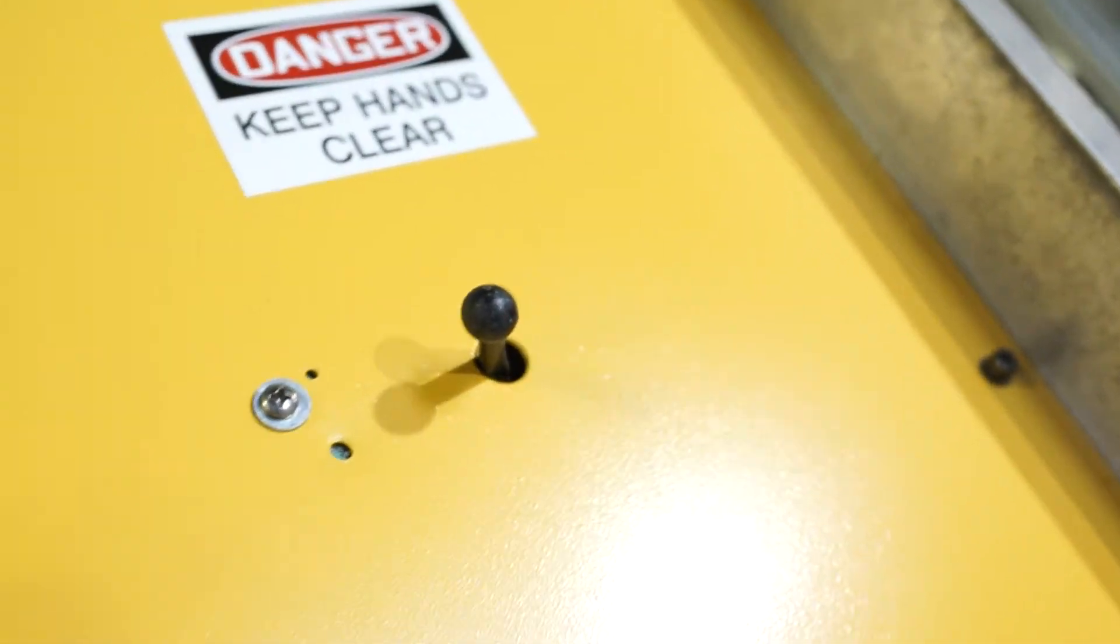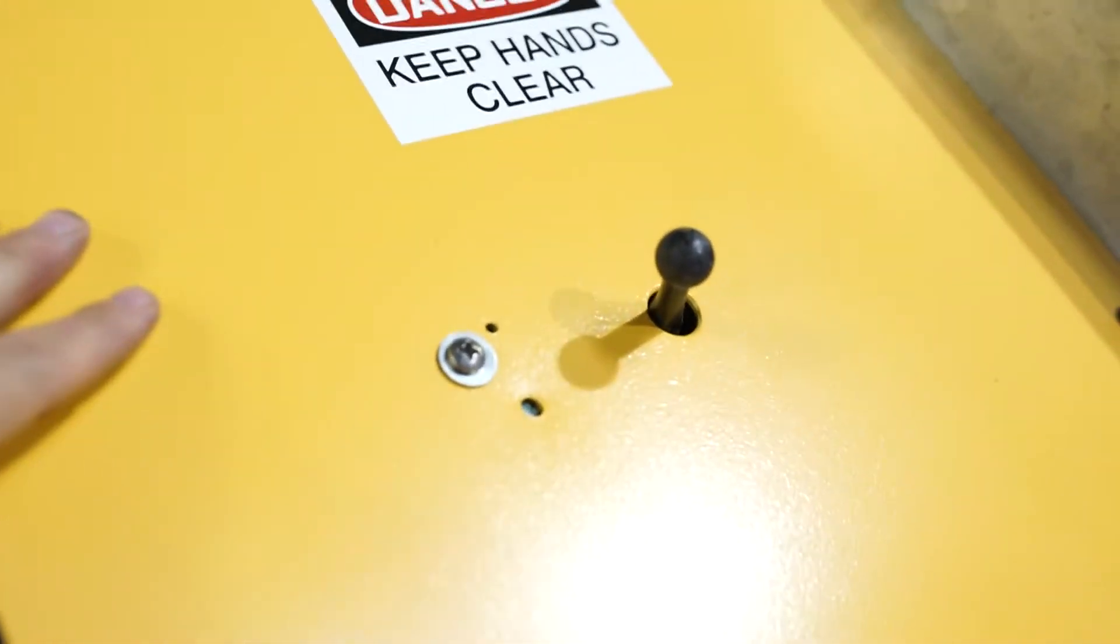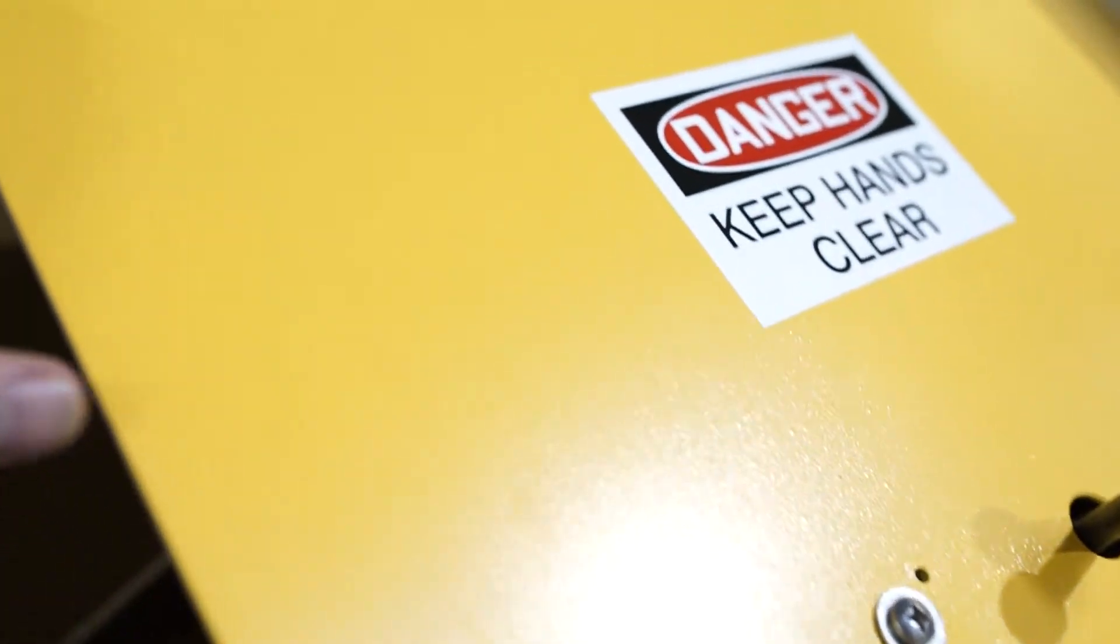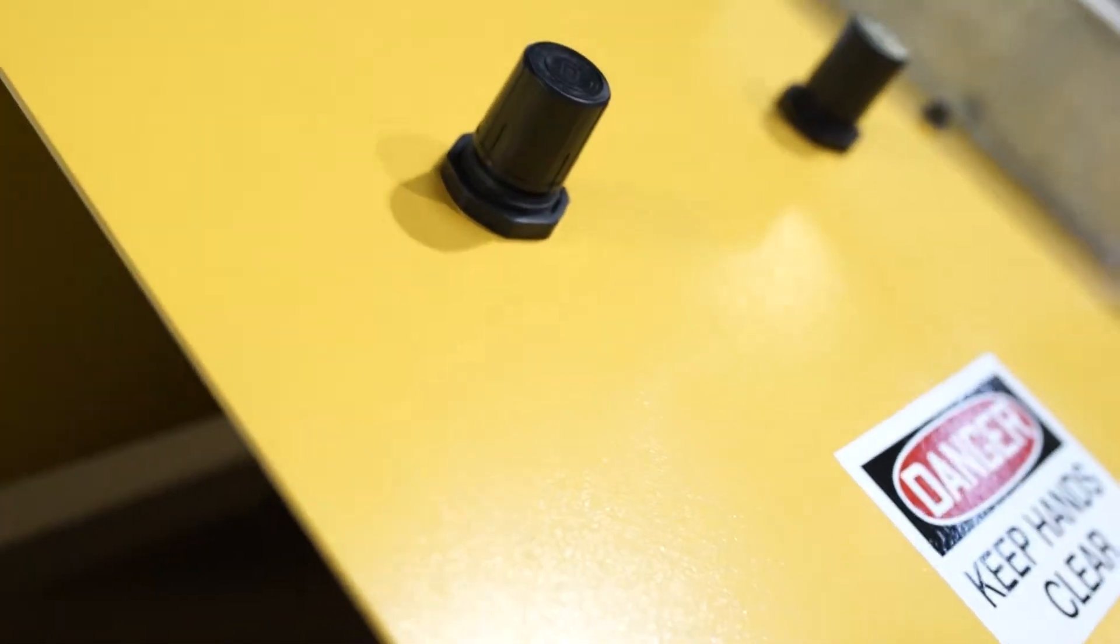At the same time, they had this off. They had all the pneumatics apart, so they also blasted this and color matched and painted it. As you can see, it has a really clean paint job on there.